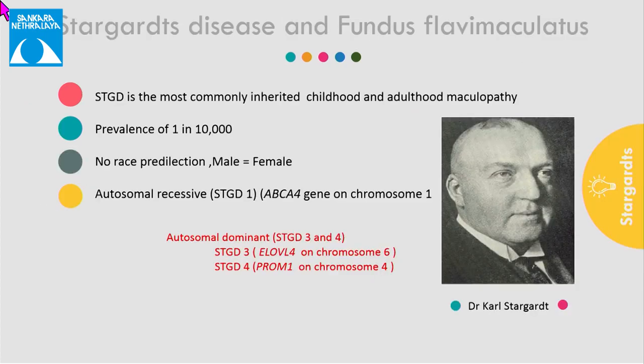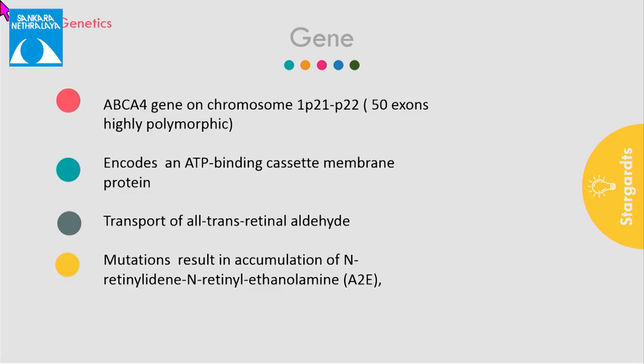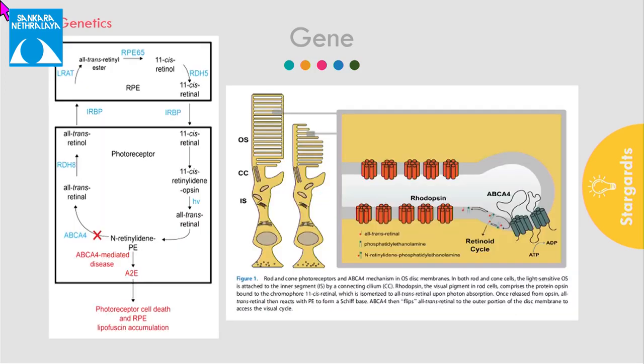Moving on to Stargardt's disease. It was first described by German ophthalmologist Dr. Karl Stargardt in 1909. It is the most common inherited retinal dystrophy, with a prevalence of 1 in 10,000, having autosomal recessive mode of inheritance. It is caused by a mutation in the ABCA4 gene on chromosome 1, which encodes for a membrane protein responsible for clearing retinoid intermediates from the visual cycle.